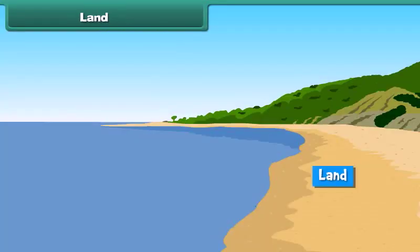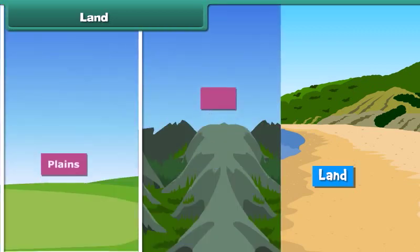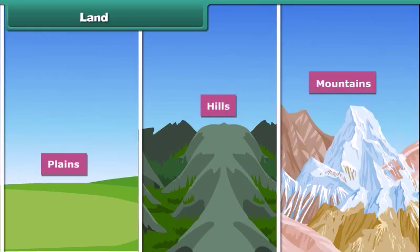Land is that part of Earth's surface that is not covered with any water body. Plains, hills and mountains are the examples of land. Come, let us learn about them.